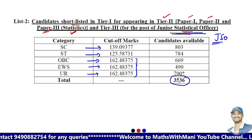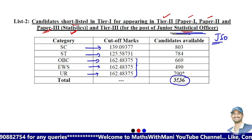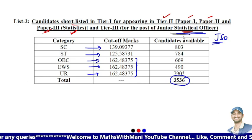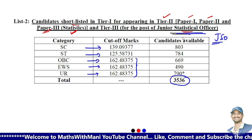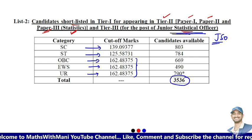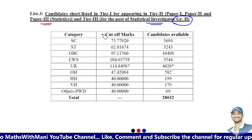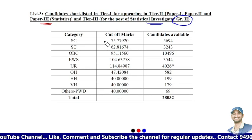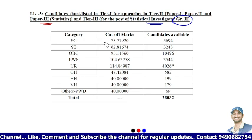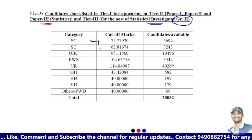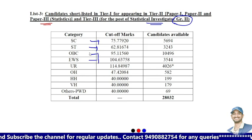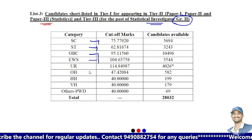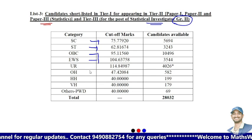There is a special eligibility criteria for Junior Statistical Officer — you must have Statistics in your degree level, only then you can write this paper. For List 3, the cut-offs are the lowest among all lists. For SC it is 75.7, ST 62.7 — all these cut-offs are very much lesser than the other lists.